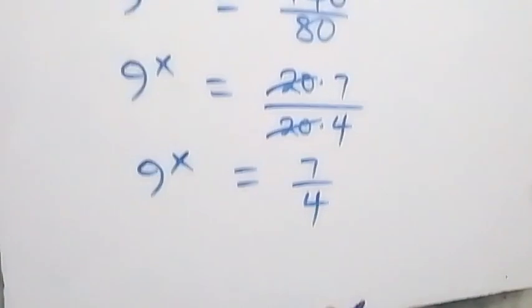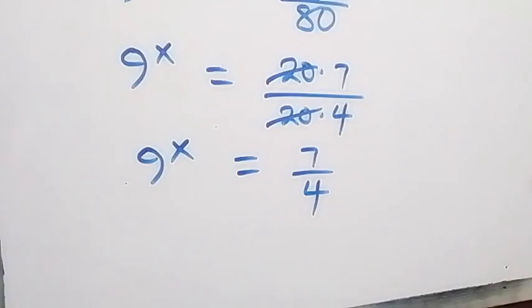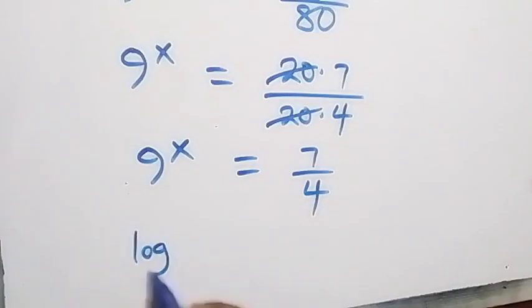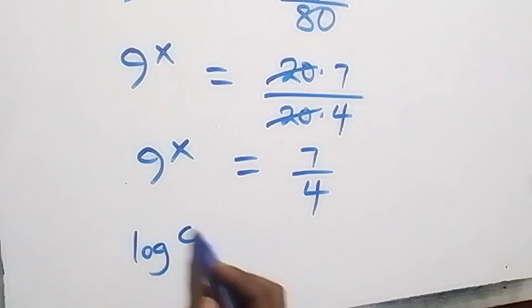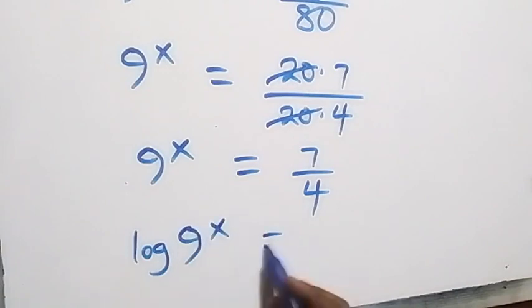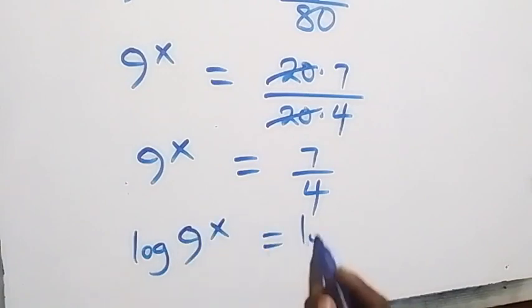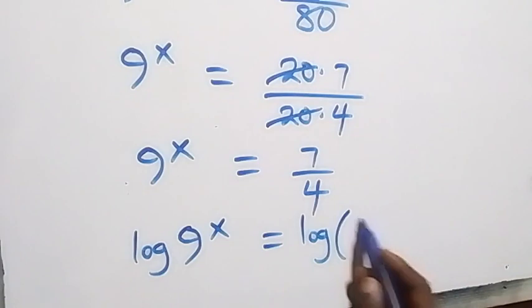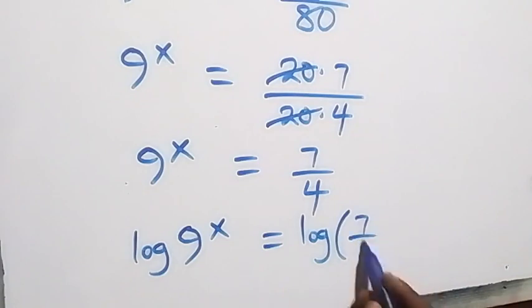And here we take the log on both sides. That is, we have log 9 raised to power x equals log 7 over 4.